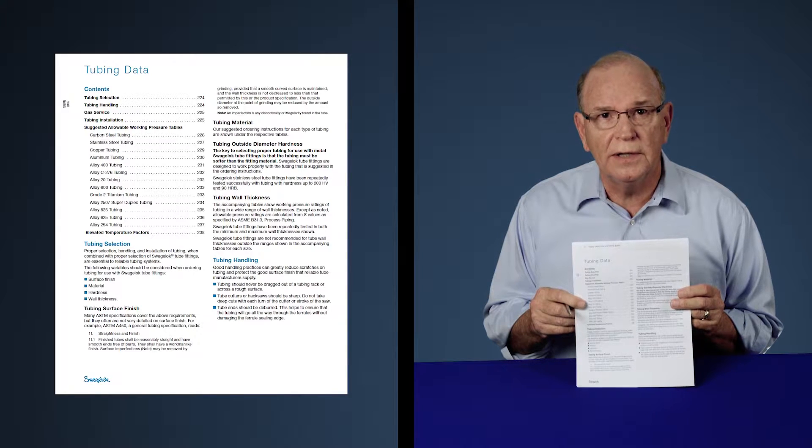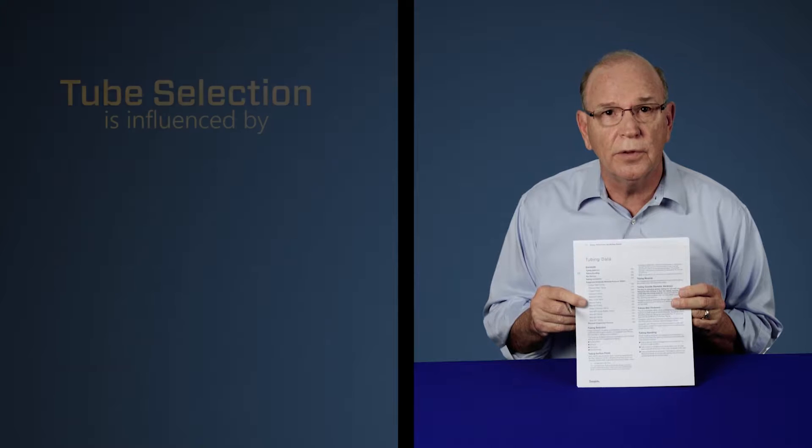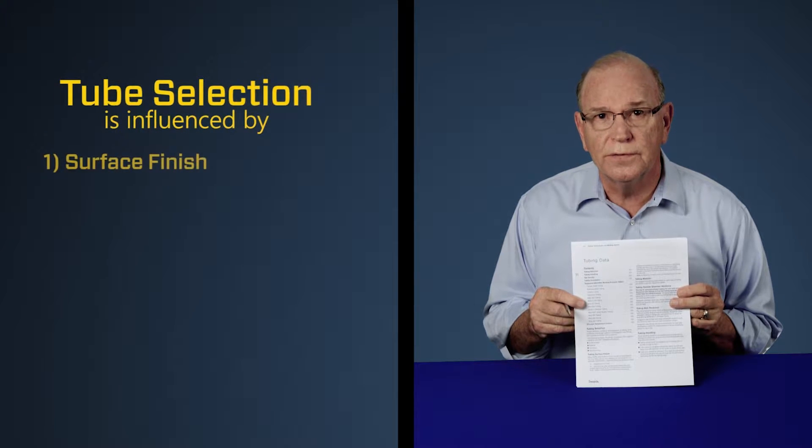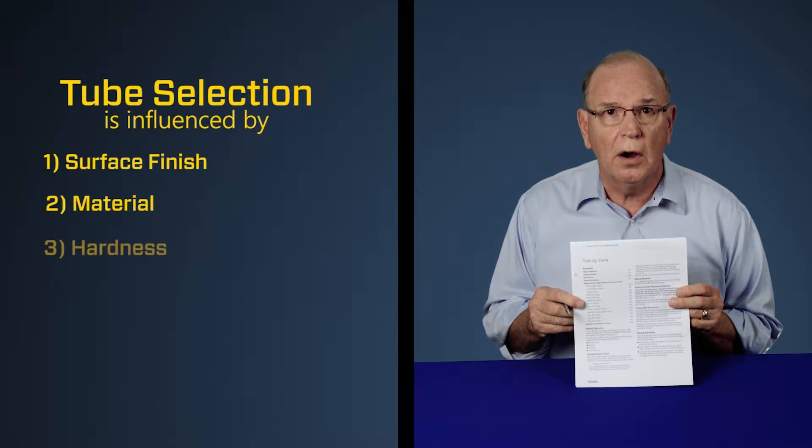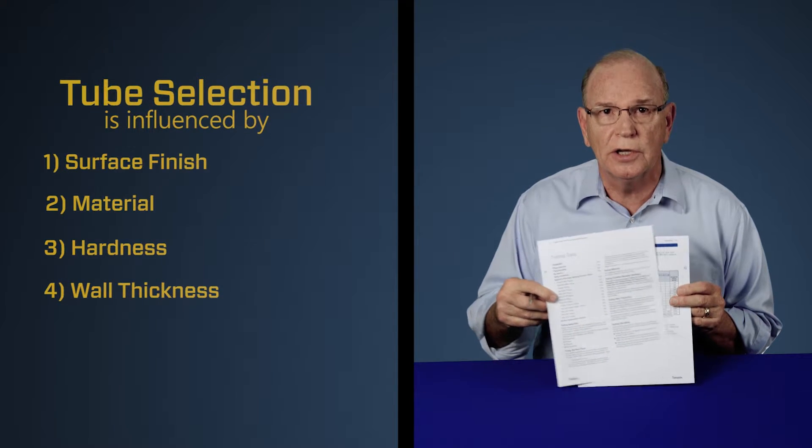There are several variables that you need to take into consideration in selecting the proper tubing. Some of those variables are surface finish, material, hardness, and wall thickness. All of that information can be found in the tubing data sheet.